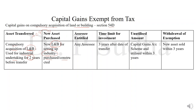This exemption can be claimed by any assessee — individual, HUF, company, partnership firm, likewise any assessee can claim this deduction. The time limit within which the new land and building must be purchased or constructed is 3 years after the date of acquisition. Unutilized amount to be deposited in capital gain scheme, unutilized within 3 years. And if the new asset is sold within 3 years, the exemption will be withdrawn.